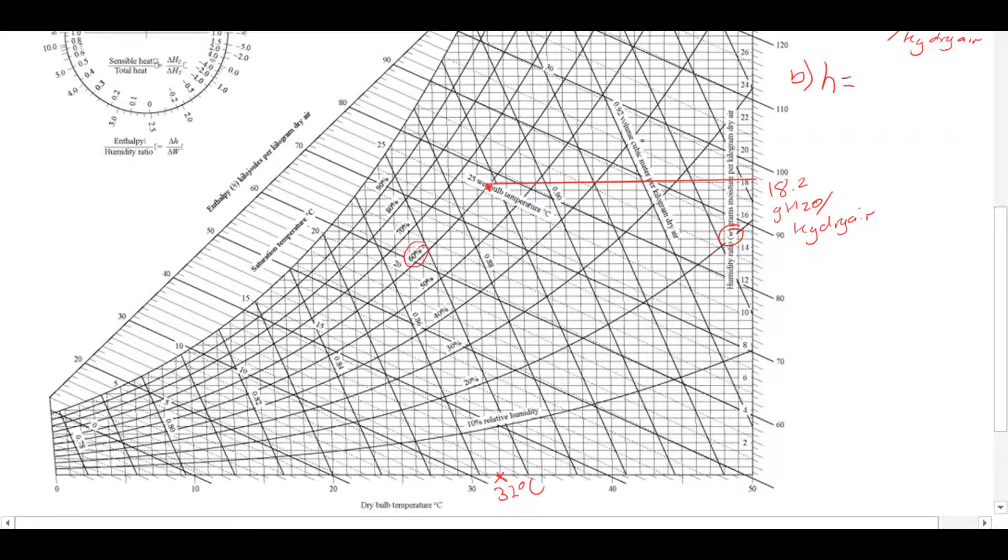Okay, so next we're looking for the enthalpy. We're looking for H. And you're going to draw that line in this direction to here. And you'll see you get the point there, which is 79. So this is 79. Now you might get slightly different values. You'll notice I've got slightly different values to the answers given on the worksheet.